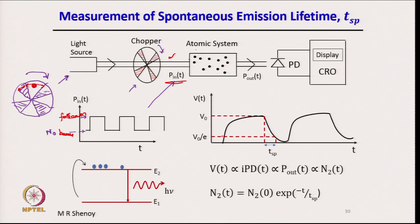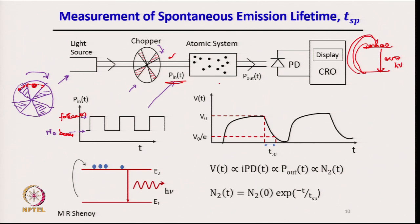When the light pulse is on, atoms are continuously excited to the upper state. When the pulse is off, the atoms already in the excited state make downward transitions — there is no excitation, but de-excitation takes place and photons are emitted as spontaneous emission, which exits the atomic system and is detected.